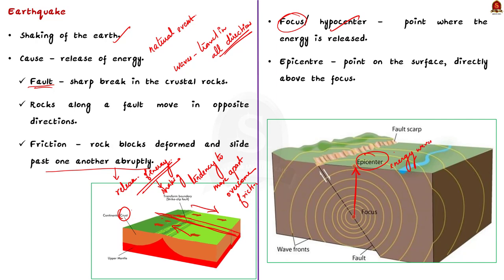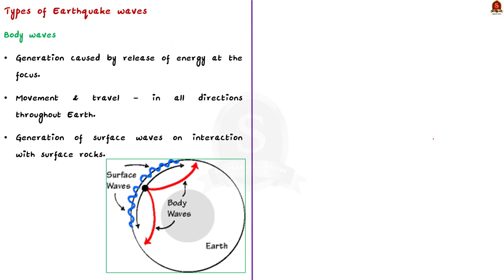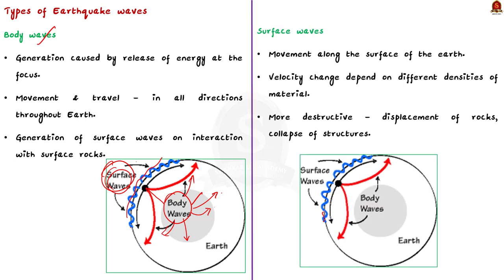Earthquake waves are basically of two types: body waves and surface waves. Body waves are generated due to the release of energy at the focus and move in all directions throughout the body of the earth. When body waves interact with surface rocks, they generate a new set of waves called surface waves. Surface waves move along the surface of the earth. The velocity of waves changes as they travel through materials of different densities — denser material means higher velocity. Surface waves are the most destructive; they cause displacement of rocks and collapse of structures like buildings and houses.